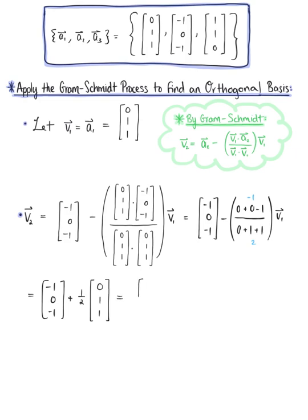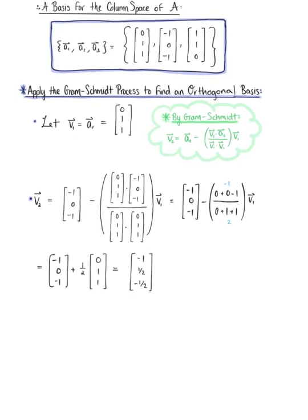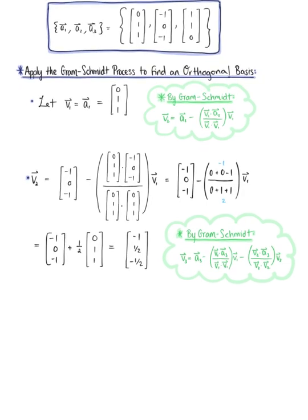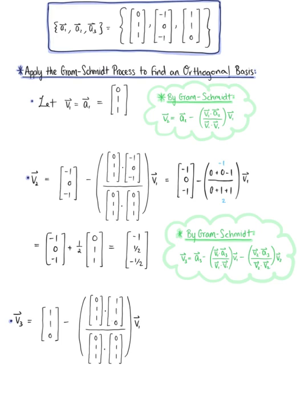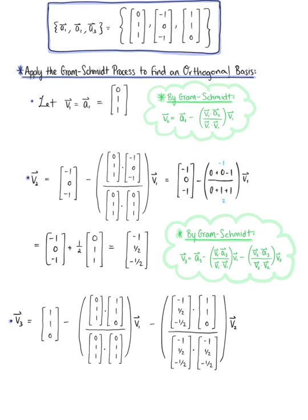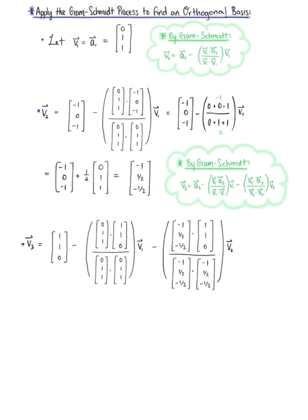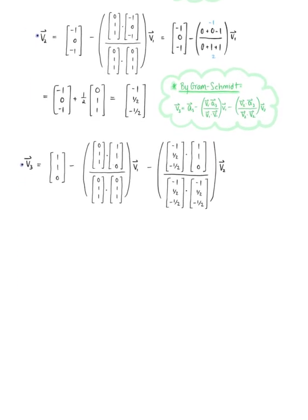Combining like terms: negative 1 plus 0 is negative 1; 0 plus one half is one half; and negative 1 plus one half is negative one half. So v2 equals (negative 1, one half, negative one half). Now that we have v2, by the Gram-Schmidt process, v3 equals a3 minus the projection of a3 onto v1 minus the projection of a3 onto v2.